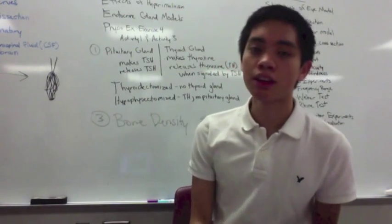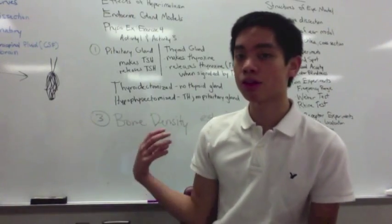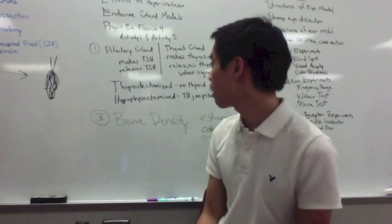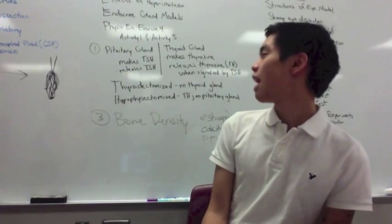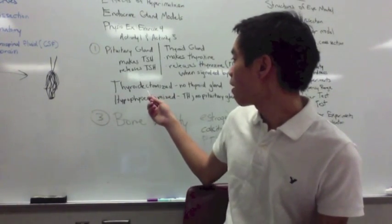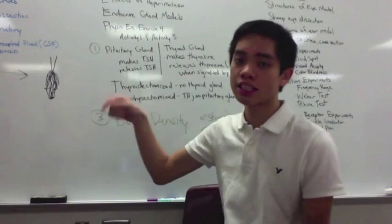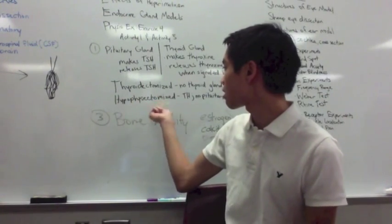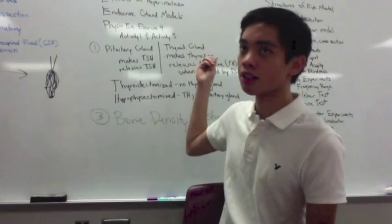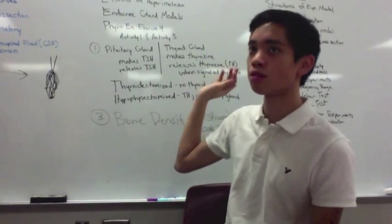Other things you need to know: in the experiment with rats, we took out the thyroid gland and the pituitary gland. Thyroidectomized means they have no thyroid gland, while hypophysectomized means they have no pituitary gland. When you are thyroidectomized, you can't produce thyroxine, but TSH is still being produced. However, when hypophysectomized, you don't have a pituitary gland, so you're not producing TSH — which means you're not producing thyroxine either, because TSH signals thyroxine to be released.